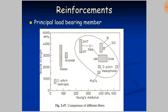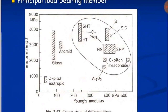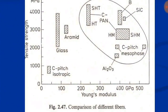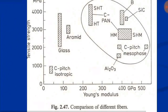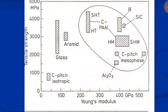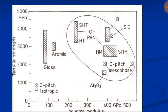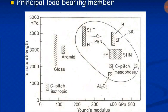For reinforcement — the principal load-bearing member — different materials offer different Young's moduli. Carbon fiber has a Young's modulus of around 1000 GPa, glass fiber is between 2000 to 4000 (arbitrary units on the chart), and aramid fiber is also listed. This basic chart summarizes the properties of common reinforcement materials.